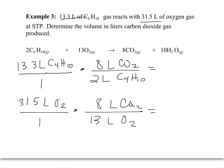So 13.3 liters of C4H10 will give us 53.2 liters of carbon dioxide and 31.5 liters of oxygen will give us 19.4 liters of carbon dioxide. We will run out of oxygen before we run out of C4H10. So we have our final answer already, 19.4 liters of carbon dioxide.